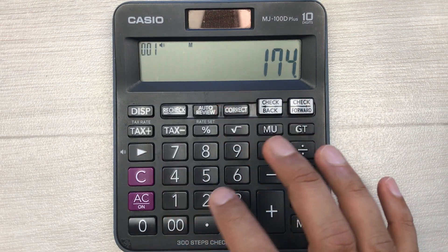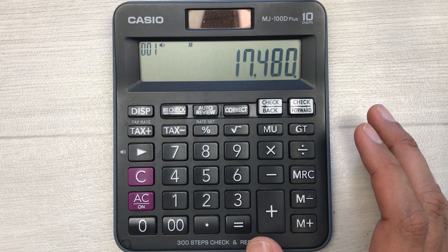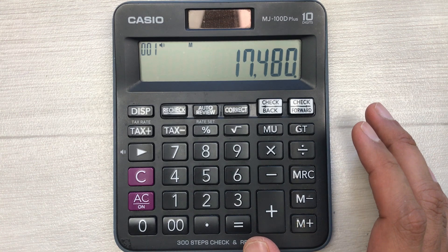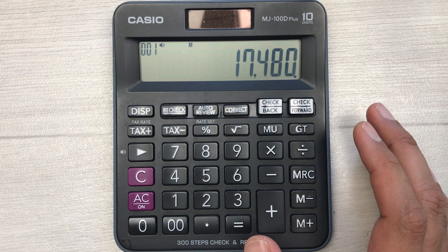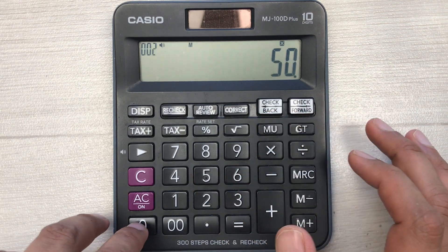Let's move to another example. Let's say you have an item and the price of that item is $174.80, and you want to find out what will be the final price after 50% discount.